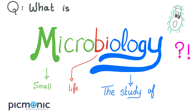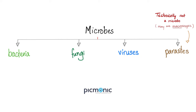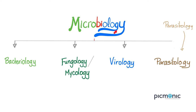What is microbiology? Micro means small, bio means life, ology means the study of. So microbiology is the study of microscopic life. Microbes are divided into bacteria, fungi, viruses, and parasites. That's why the science of microbiology is divided into bacteriology, mycology, virology, as well as parasitology.